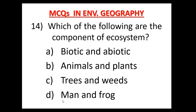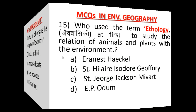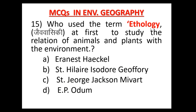Question number 14: Which of the following are the components of ecosystem? निम्न में से कौन ecosystem का component है? Option A: Biotic and Abiotic, Option B: Animals and Plants, Option C: Trees and Weeds, Option D: Man and Frog. The answer is Option A — Biotic and Abiotic components are the components of ecosystem.